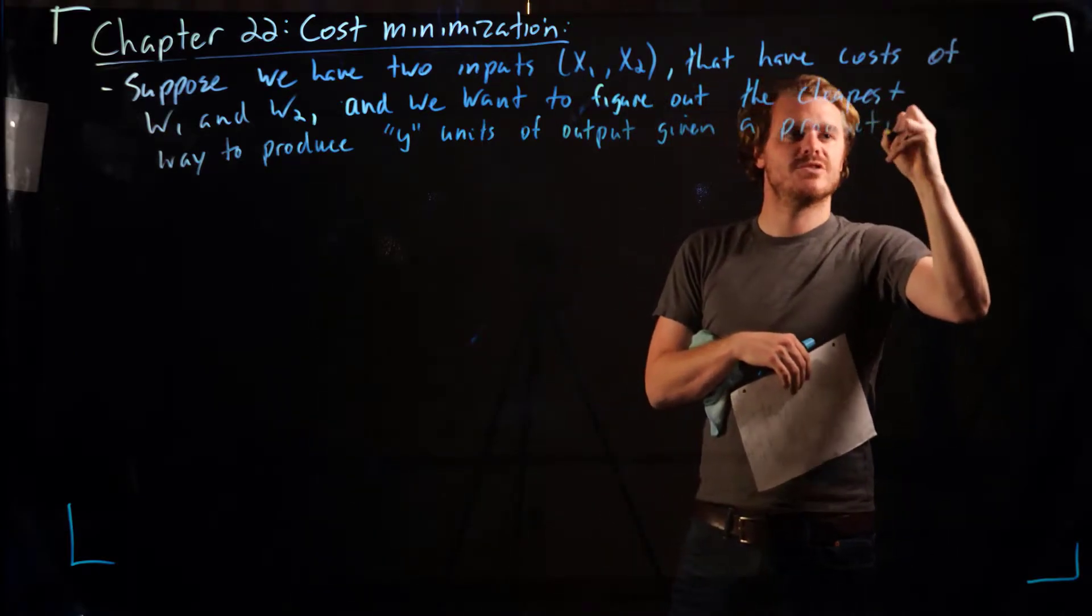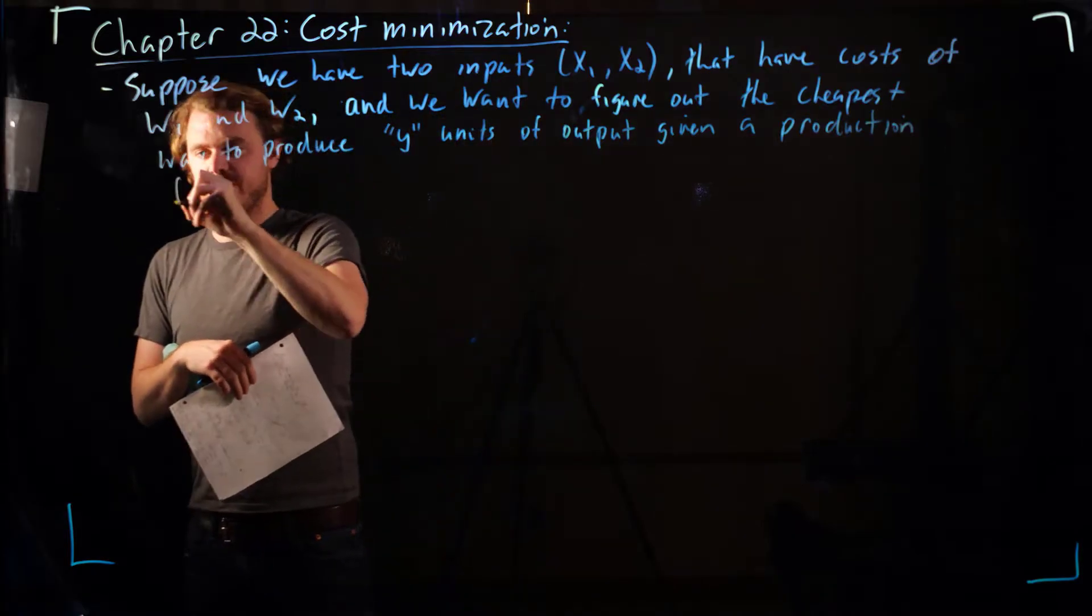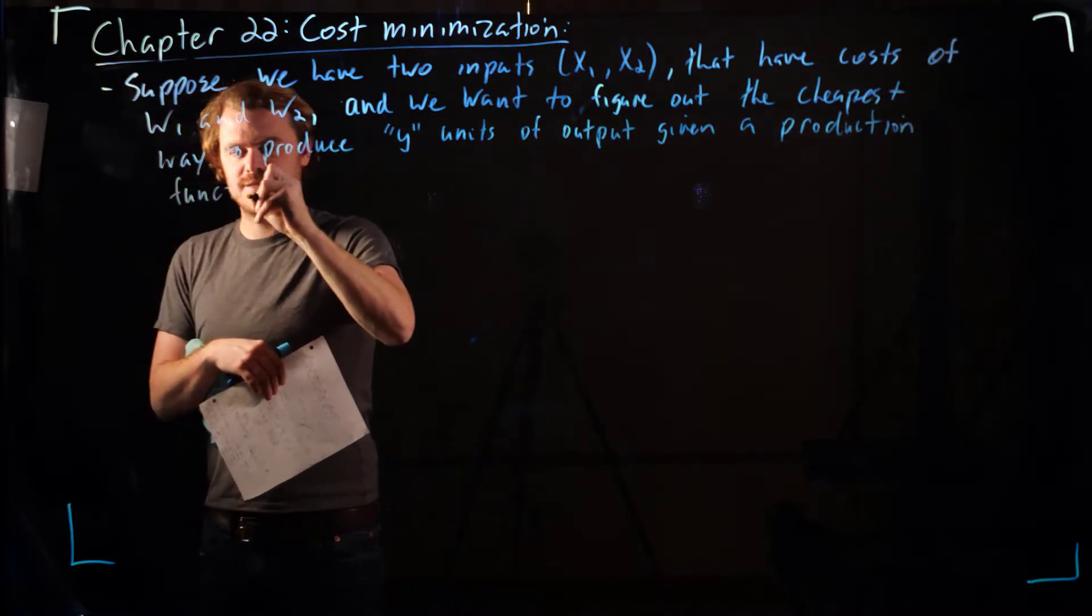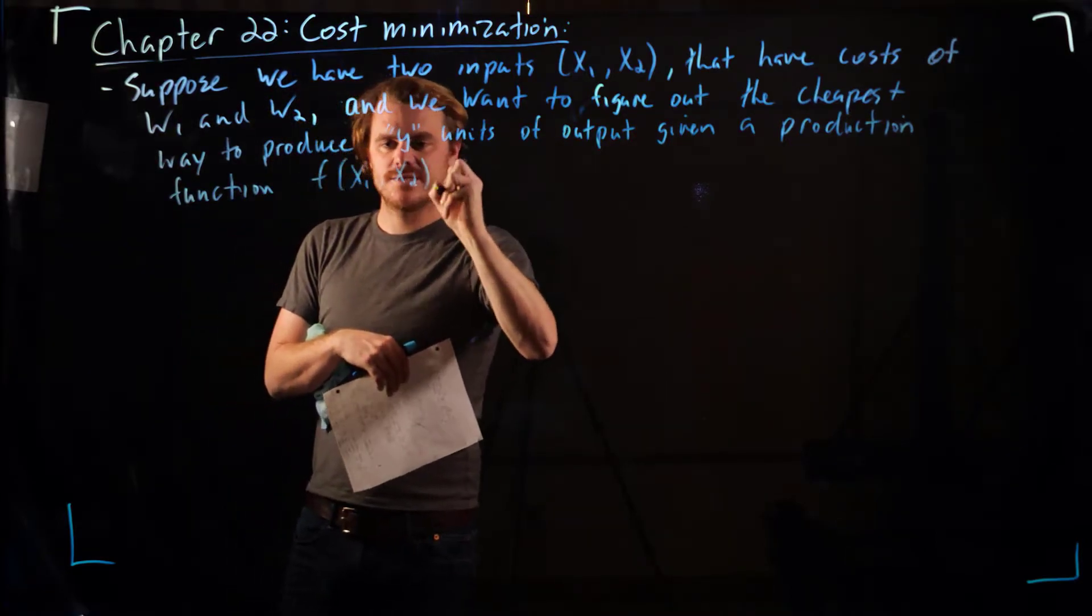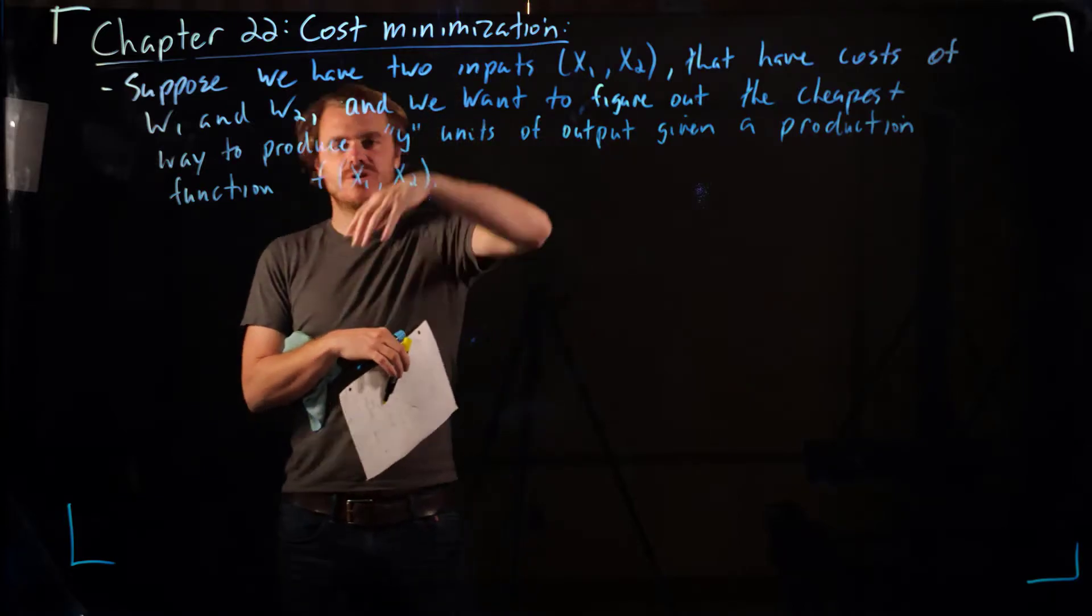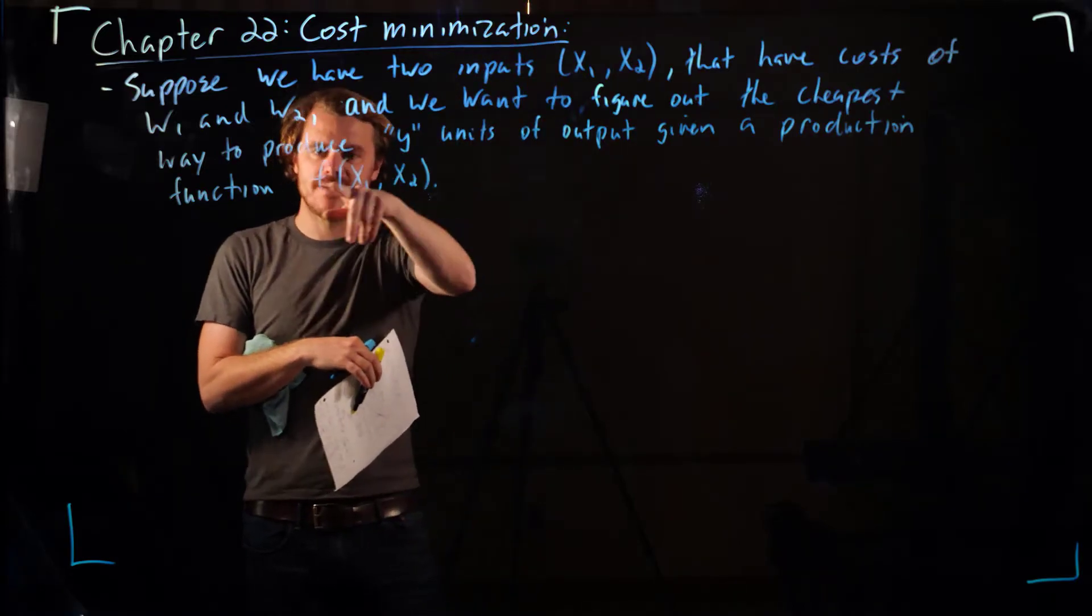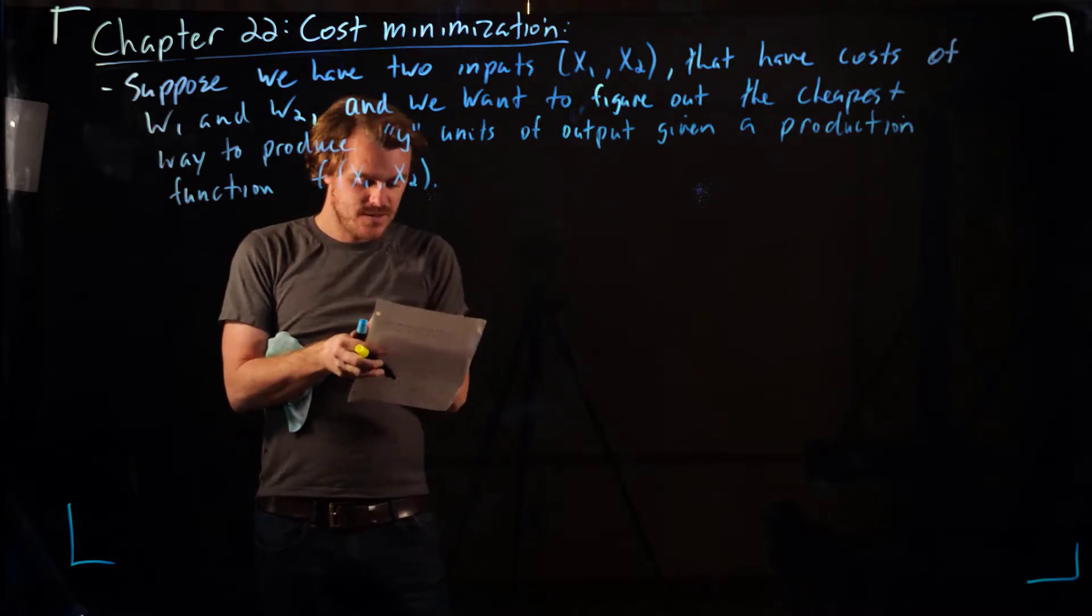Let's leave our production function really general. The production function looks like this, where f is that function and it takes these inputs and gives output. Different types of technology would have different production functions.